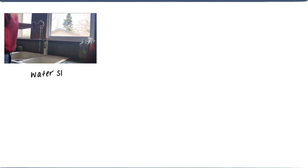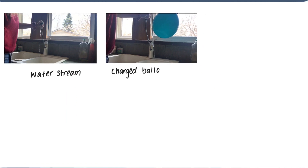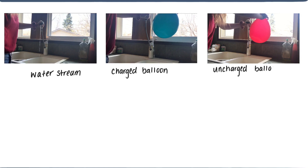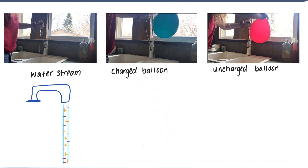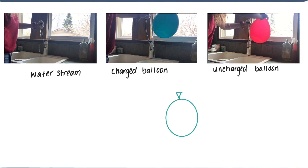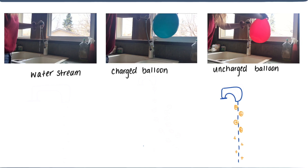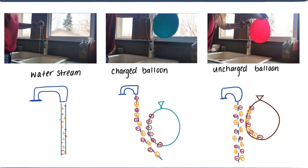Isn't that cool? We were able to move the water without ever even touching it. Let's take a closer look at the three scenarios: the water stream by itself, the charged balloon, and the non-charged balloon. The water stream by itself has neutral water, meaning the water has a balance of positive and negative charges. The charged balloon has excess negative charges near the surface, so when we put it close to the stream, the negative charges attract the positive charges in the water and it acts like a magnet. But when the balloon isn't charged, it also has a balance of positive and negative charges, so nothing happens. For the balloon to pull the water towards it, it needs to have the extra negative charges near the surface.